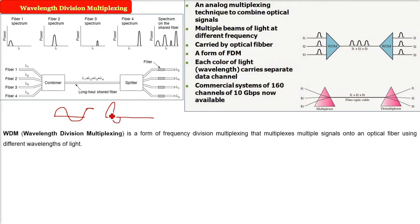Now, a white light if you see and if you pass it through a prism, it will give you all the different colors, different wavelengths. So, this WDM, Wavelength Division Multiplexing is a form of FDM only, frequency division multiplexing.